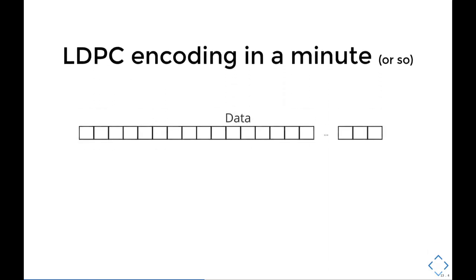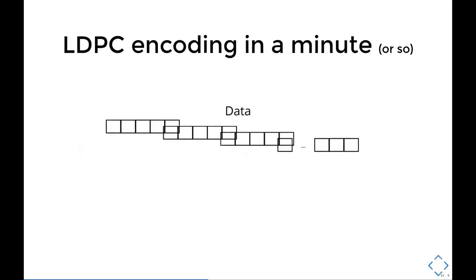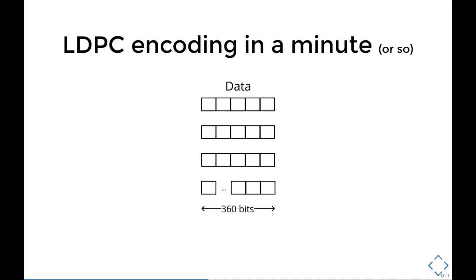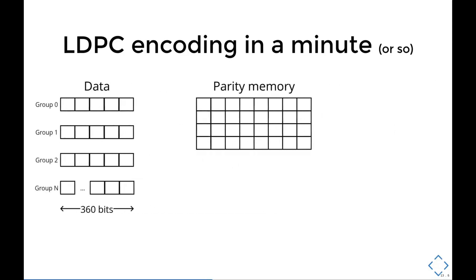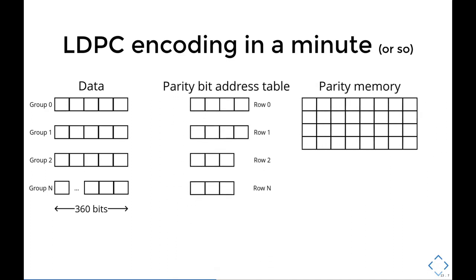We start with the data frame. This data frame has a certain length. For this example, it doesn't matter really what the length is, but the spec defines the frame as having K LDPC bits. This frame is then divided in groups of 360 bits each. The parity bits will be stored in a memory, and I'm gonna call this the parity memory. Each data bit will be XORed with values pointed by offsets given by the parity bit address table. Essentially, each group of 360 bits will use one row from the parity bit address table.